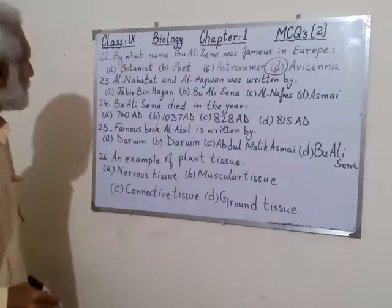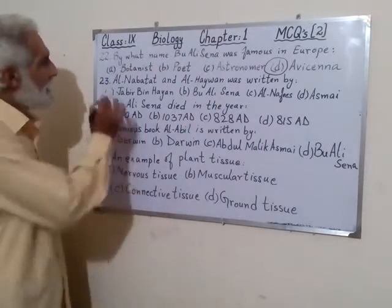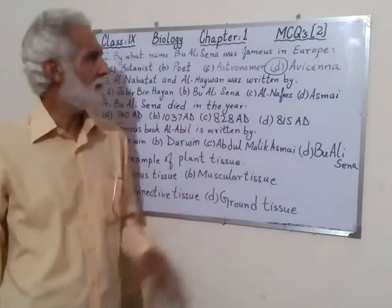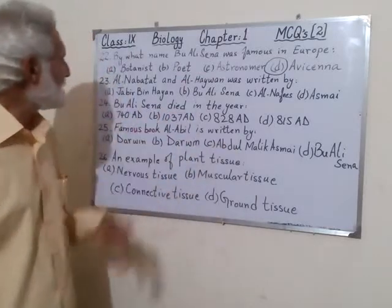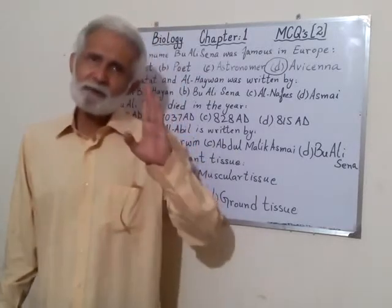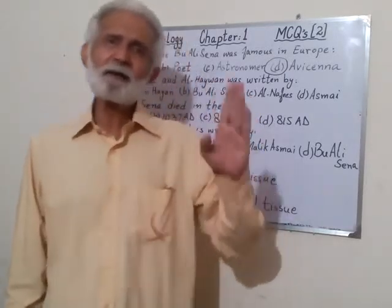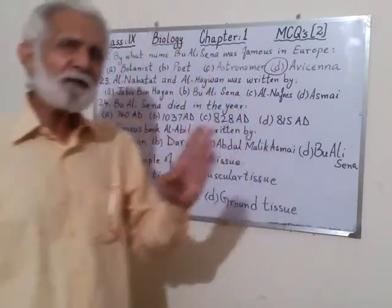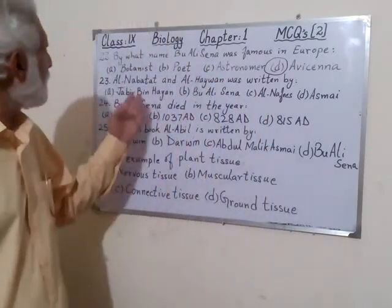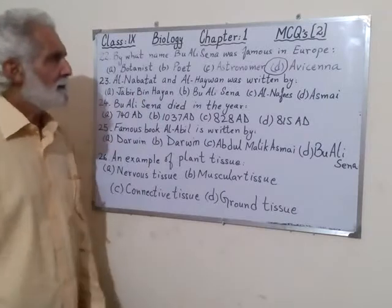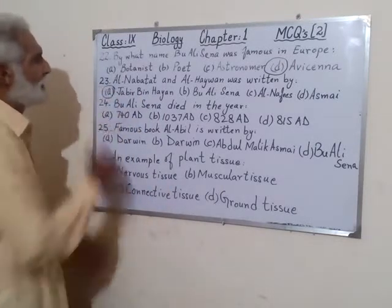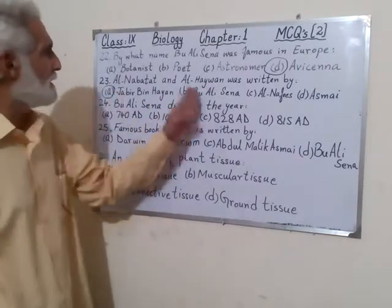Number 23: Al-Nabatat and Al-Haywan was written by whom? Remember that Al-Nabatat, Al-Haywan, Al-Kheel, Al-Wahush — these are all very famous books. The answer is that Jabir bin Hayyan has written the books Al-Nabatat and Al-Haywan.